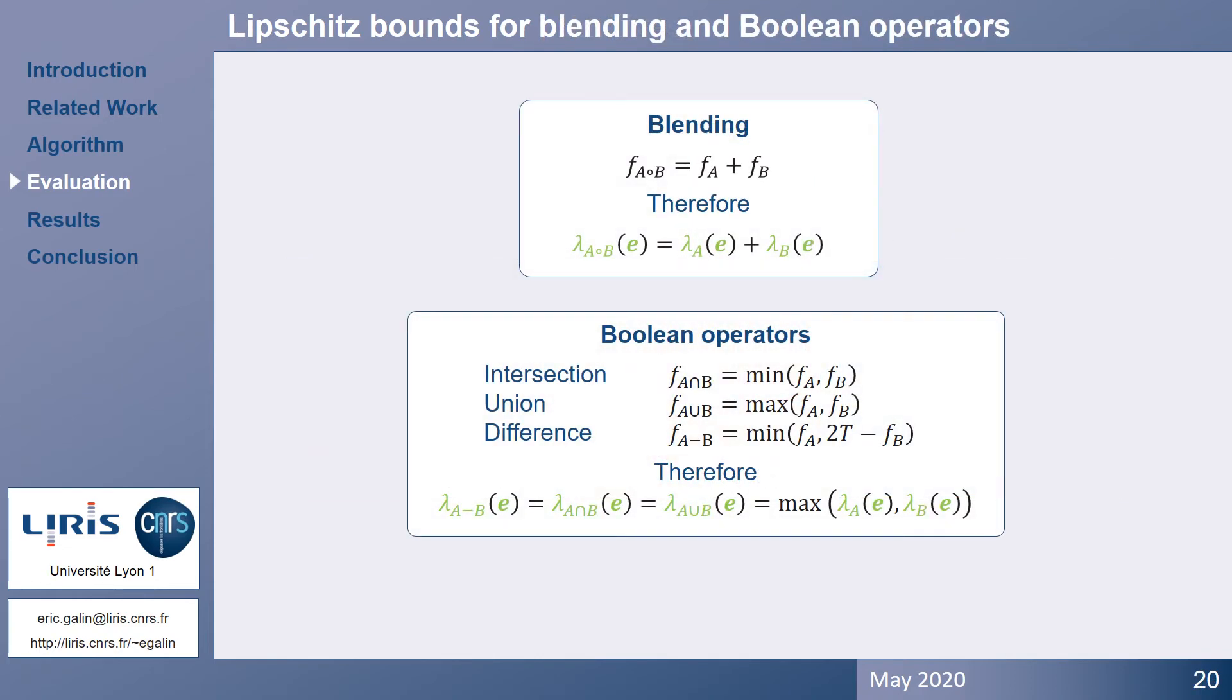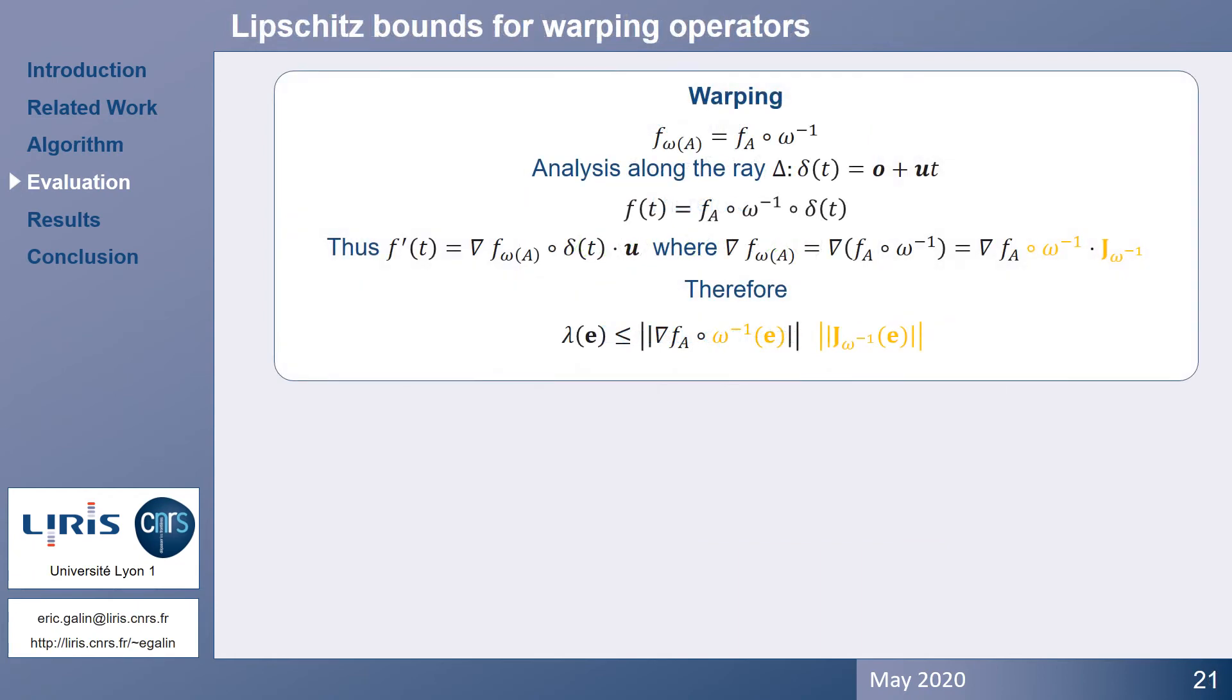Let's have a look at operators, and let's start with the easy ones. In essence, these equations mean that we can compute the Lipschitz bound of the boolean or blending operator of a segment by recursively traversing the construction tree, computing the Lipschitz bounds of the children nodes, and finally summing the values or calculating the maximum.